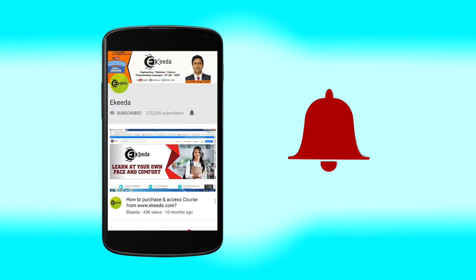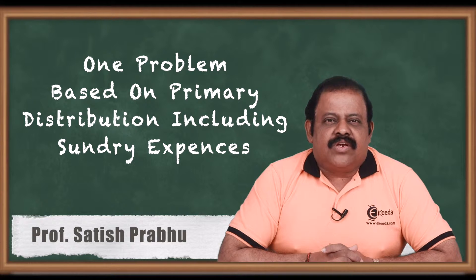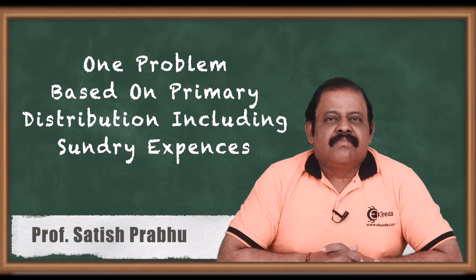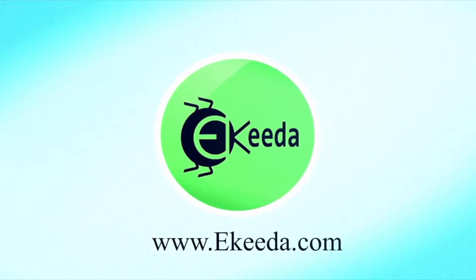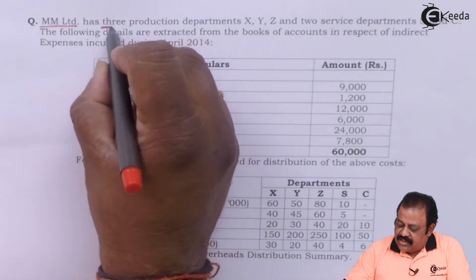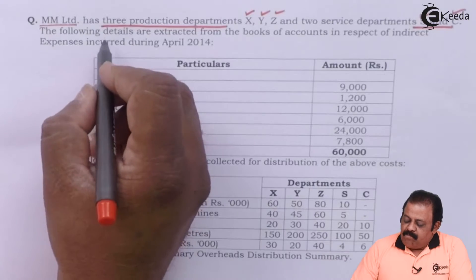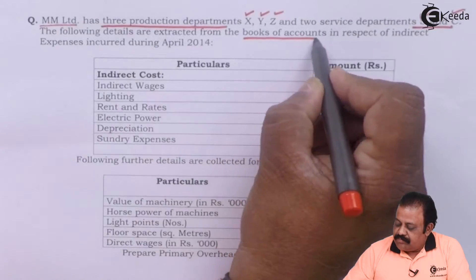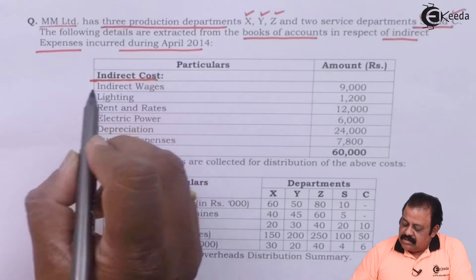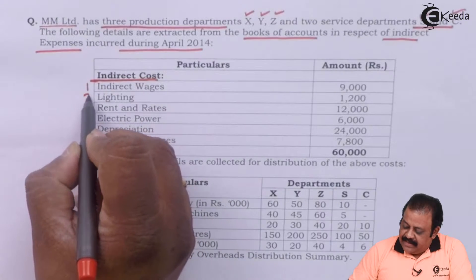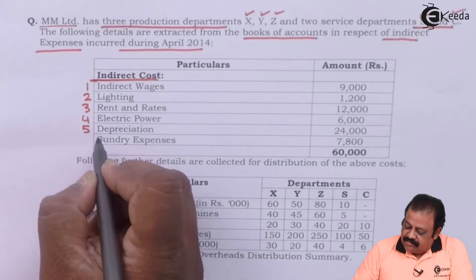Click the bell icon to get latest videos from Ikita. Hello friends, we will learn today one question on primary distribution of overheads where sundry expenses are given in the question. MM Limited has three production departments X, Y and Z and two service departments S and C. The following details are extracted from the books of accounts in respect of indirect expenses incurred during April 2014: indirect wages, lighting, rent and rates, electric power, depreciation, and sundry expenses.